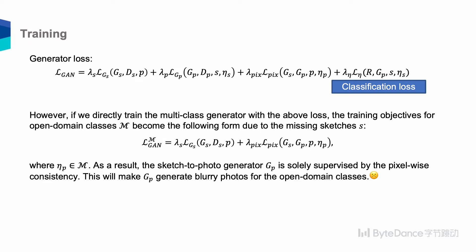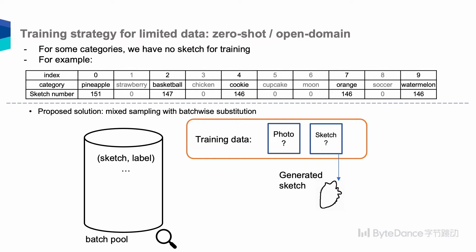During training, our generator loss includes the following terms: adversarial loss from sketch and image domains, pixel-wise reconstruction loss, and classification loss. However, if we directly train the multi-class generator with the above losses, the training objectives for open domain classes M lack supervision due to missing sketches S. As a result, the sketch-to-photo generator GP is solely supervised by pixel-wise consistency, which makes GP generate blurry photos for open domain classes.